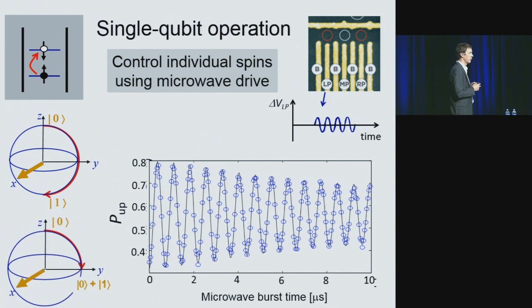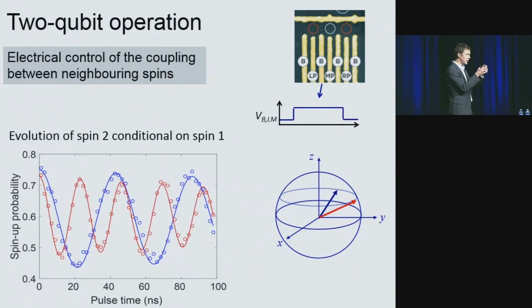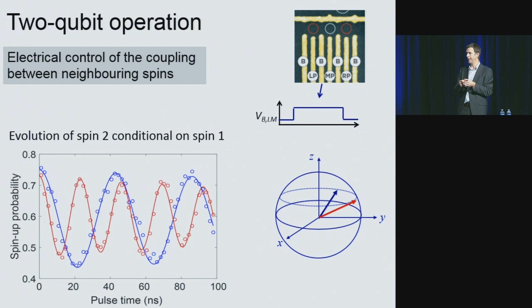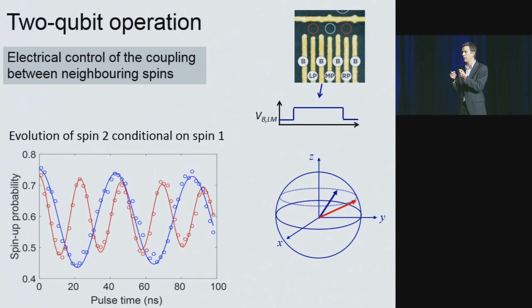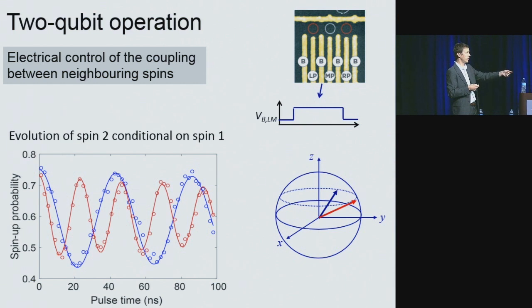Applying the same microwave drive for half the duration prepares a superposition: starting from zero, we take it to zero plus one. As a function of the drive duration, the measured probability of finding the spin up oscillates sinusoidally. For the two-qubit gate, we apply a gate voltage to the gate separating neighboring electrons, allowing them to overlap slightly so they interact. Under the right conditions, one spin evolves at a rate dependent on the state of the other — the basis of conditional logic.